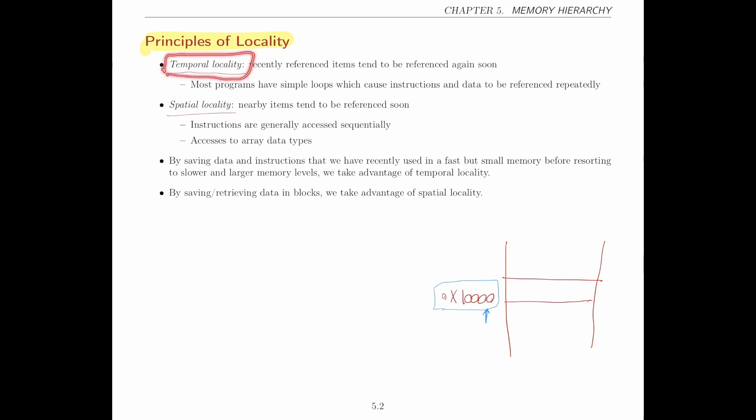To be able to predict what parts of the memory are used a lot, we can basically look at what parts have been used recently and hope that they will also be used soon. The second part of locality is called spatial locality. Spatial—related to space. What this means is quite different from temporal locality.